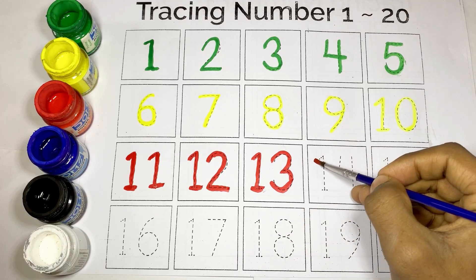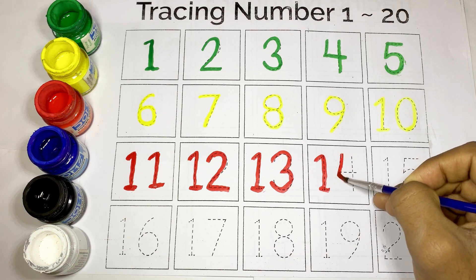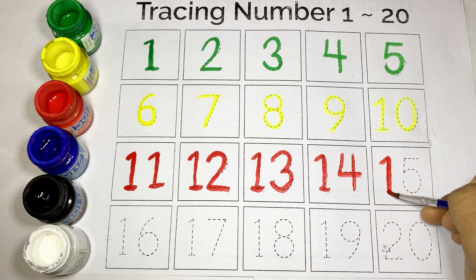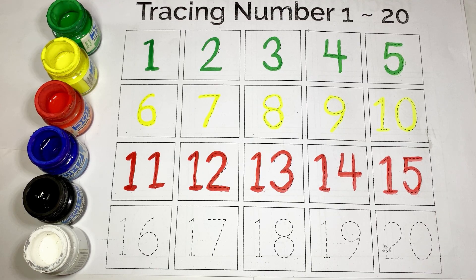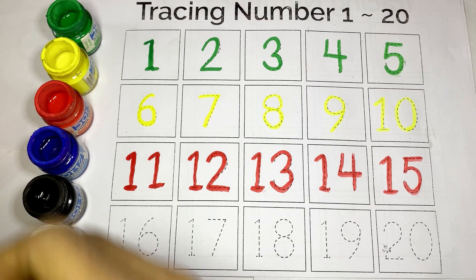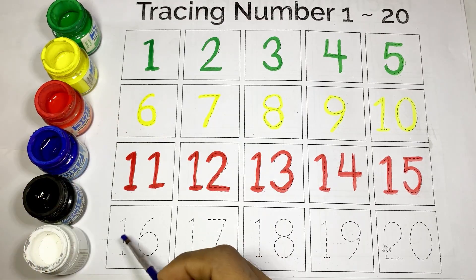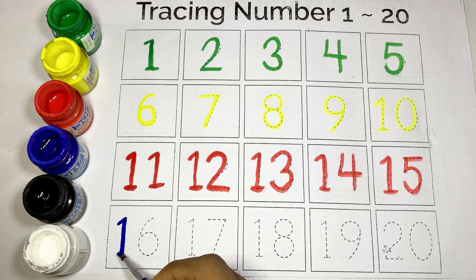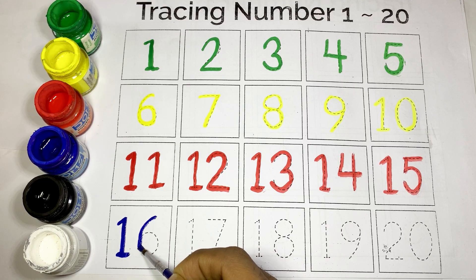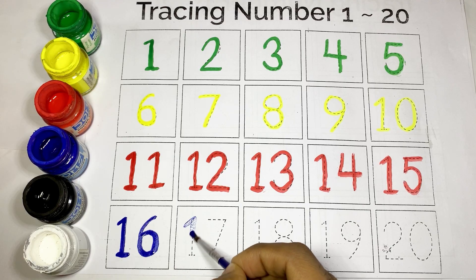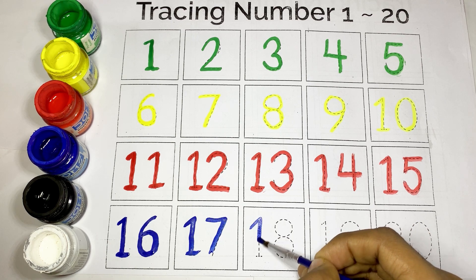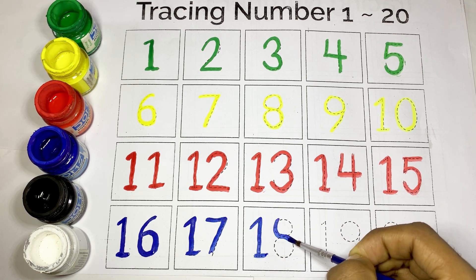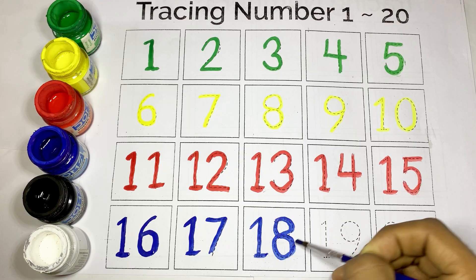Numbers sixteen to twenty use blue color. Blue color. This is sixteen. This is seventeen. This is eighteen. This is nineteen. This is twenty.